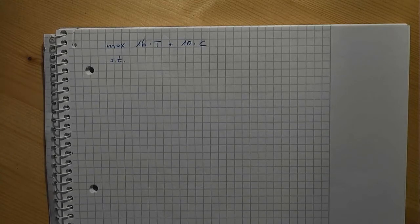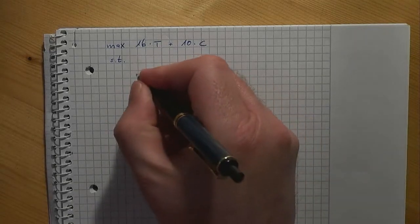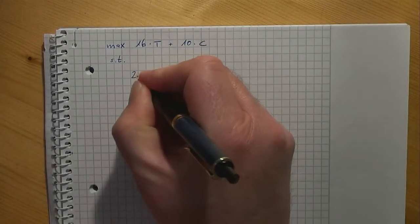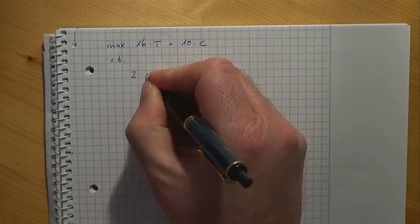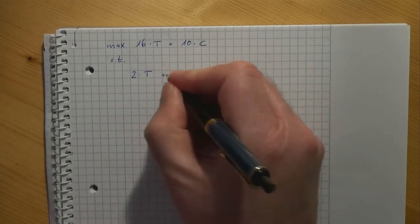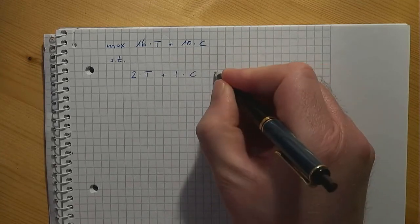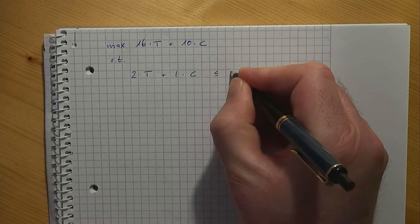Maximize 16 times the number of tables plus 10 times the number of chairs. Six 2x4's are available. Hence the number of used 2x4's must be less than or equal to 6. Two times the number of tables plus 1 times the number of chairs is less than or equal to 6.